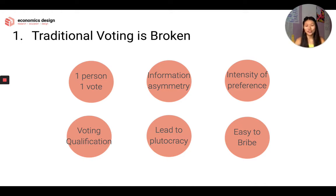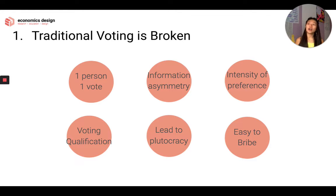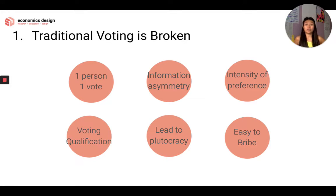We're going to start with traditional voting. I really dislike traditional voting because traditional voting is broken. It's the one person, one vote system. It's fair to the extent where everyone has an equal opportunity, but it's not really good because it leads to information asymmetry. You can't put in your intensity of preference, and an individual might not be the best candidate to be voting on an issue because they just don't have enough information. Giving the person with no information the same vote as the person with a lot of information isn't really fair when we're talking about governance in the ecosystem.